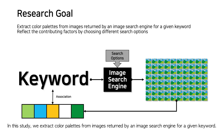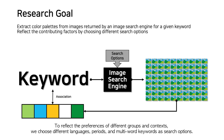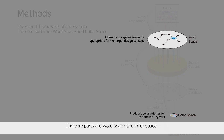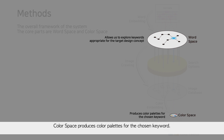In this study, we extract color palettes from images returned by an image search engine for a given keyword to reflect the preferences of different groups and contexts. We choose different languages, periods, and multi-word keywords as search options. This figure shows the overall framework of our system, whose core parts are word space and color space. Word space allows us to explore keywords appropriate for the target design concept, and color space produces color palettes for the chosen keyword.